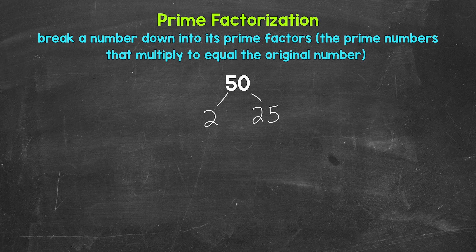Now, let's continue breaking this down. So we have 2 and 25. Now, 2 is prime. The only factors are 1 and 2. So we are done over here. We can't break that down any further. So we're going to circle it to show that we have a prime number.